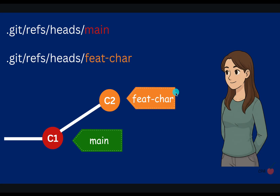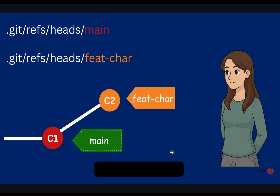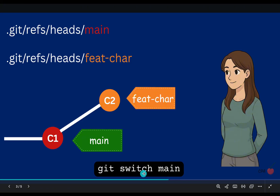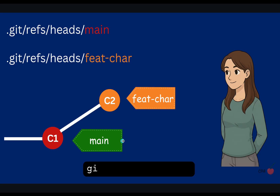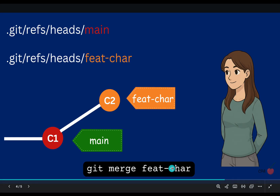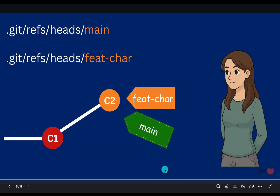In order to merge this branch into main, we first need to switch to the main branch using `git switch main`. While we are on the main branch, we type `git merge` followed by the name of the feature branch. This will merge the changes from the feature branch into the main branch.